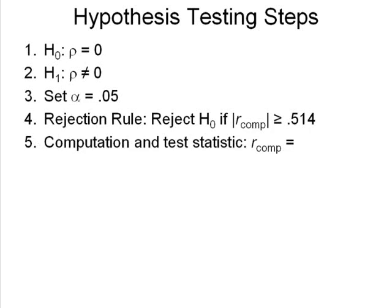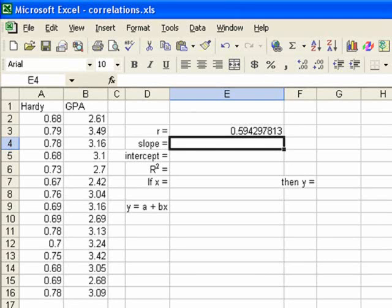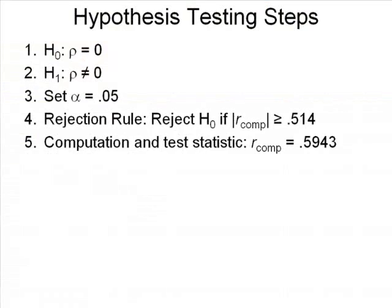Now, the next step is to do the calculation, computation and test statistic. What does RComp equal? Well, we've already done that. So let's just look at our spreadsheet that we've already done, and we'll see that we found that R was equal to .5943. So we'll just move that and put it in our table: .5943.